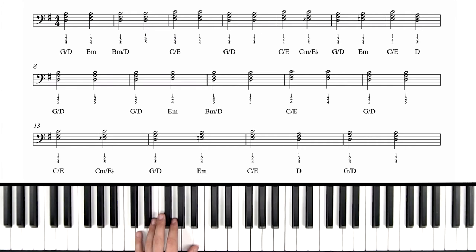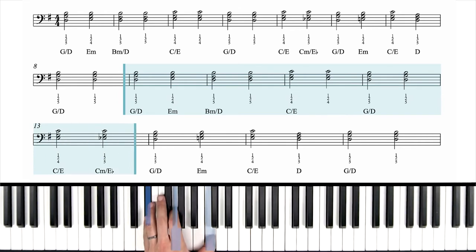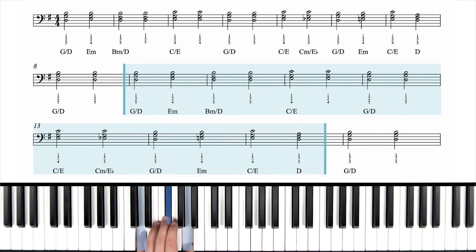It's exactly the same as the first half. So we've got G over D. E minor. B minor over D. We'll do it twice. And C over E twice. G over D twice. All two count notes. All even. Next line, C over E. Now C minor over E flat. G over D. E minor. This is all like before, first half. We'll end it with two G over D's.